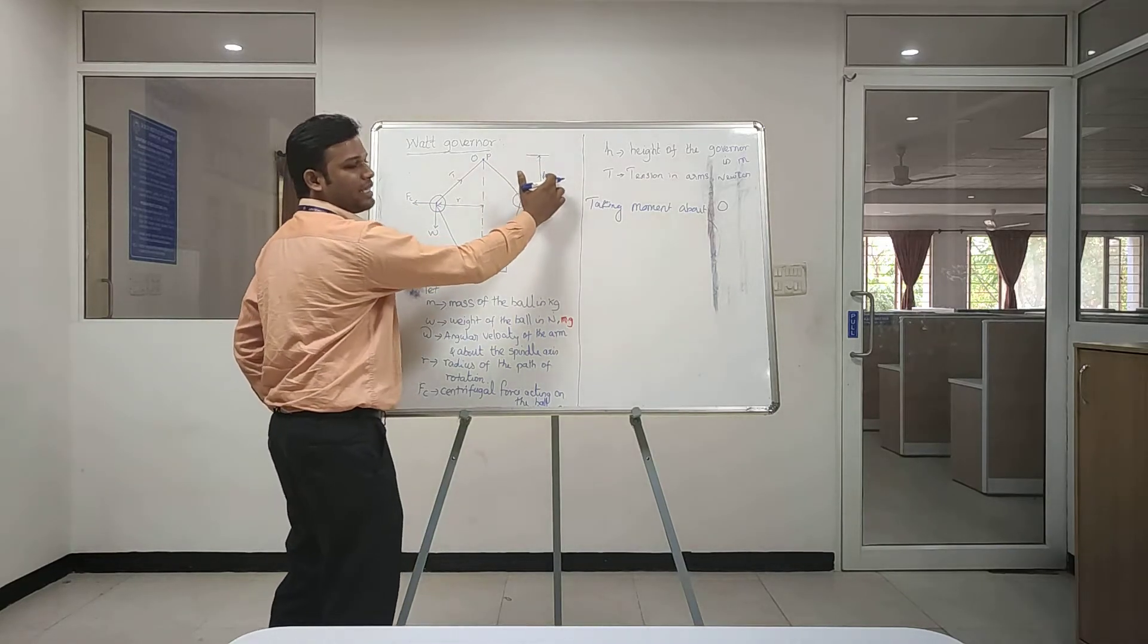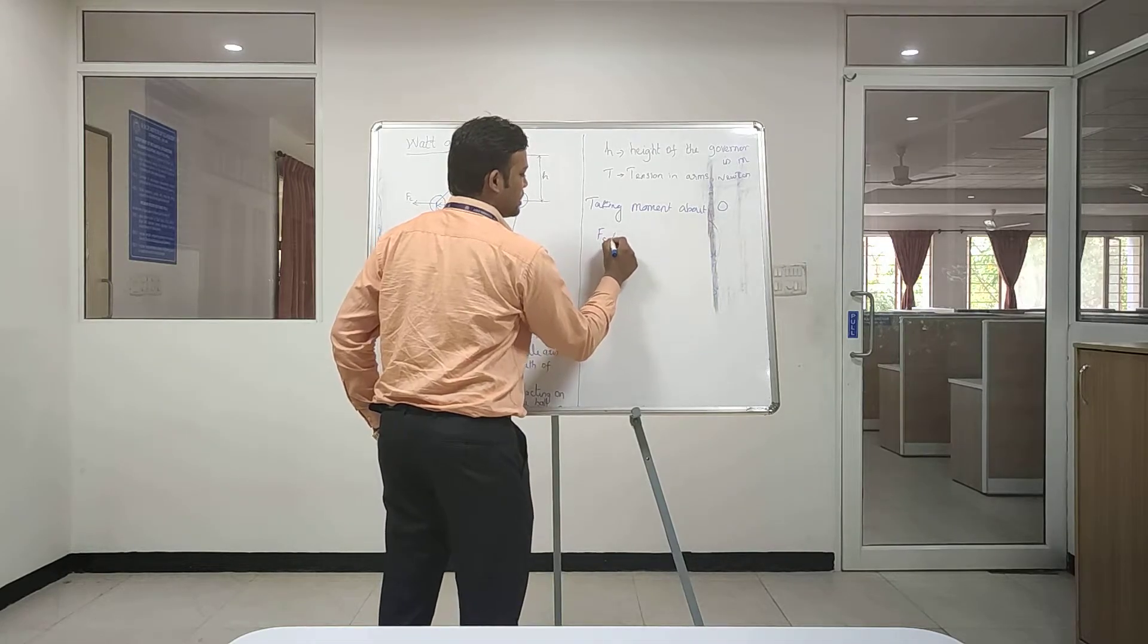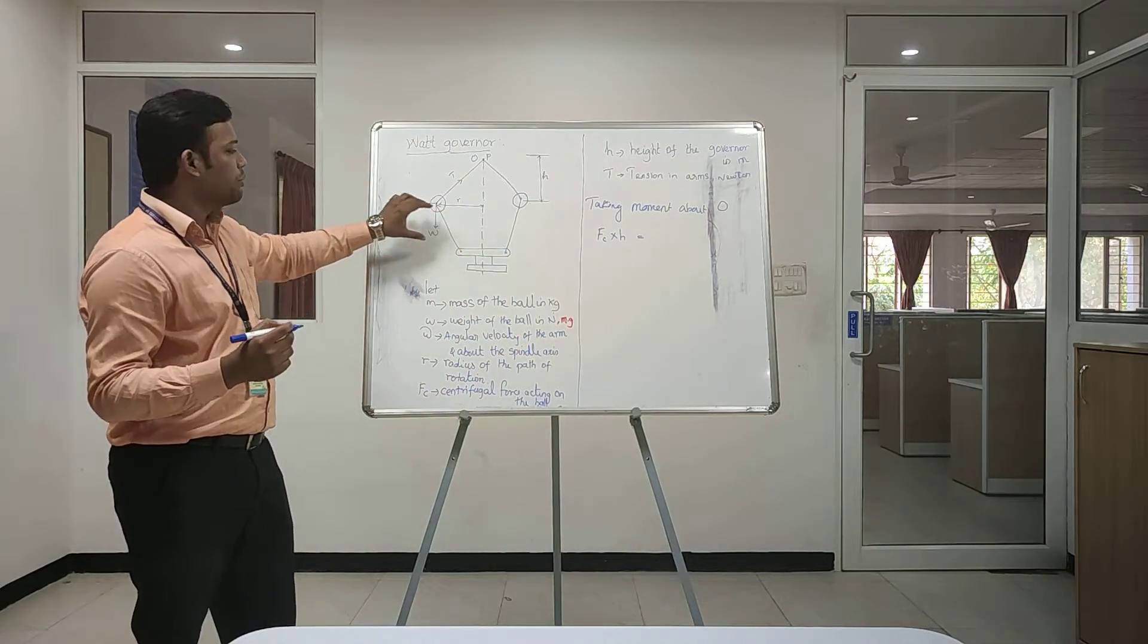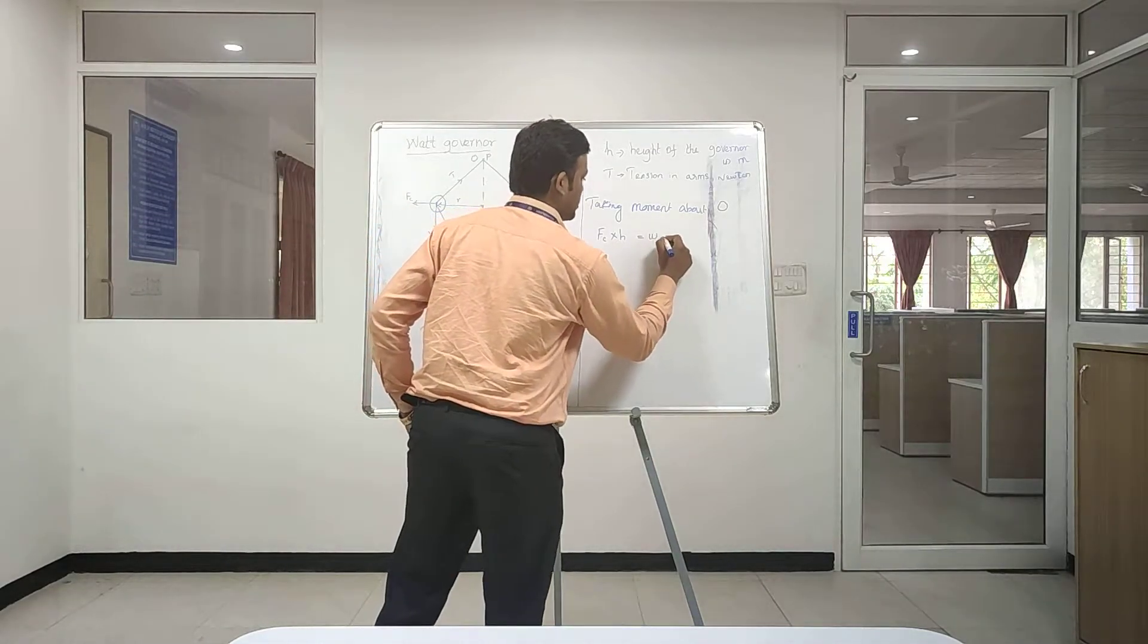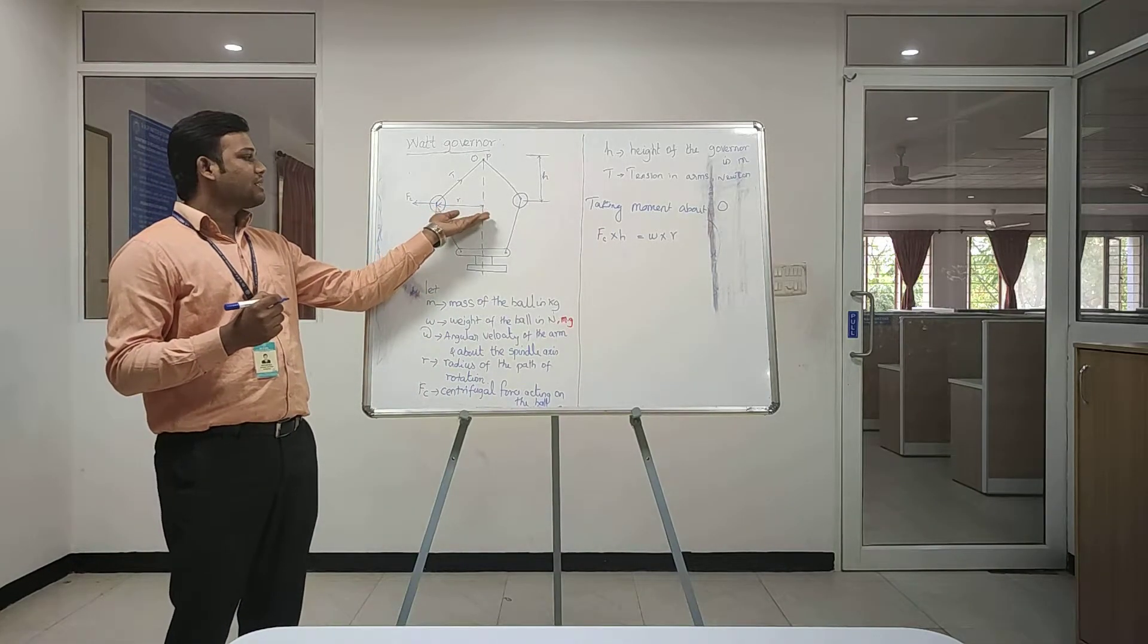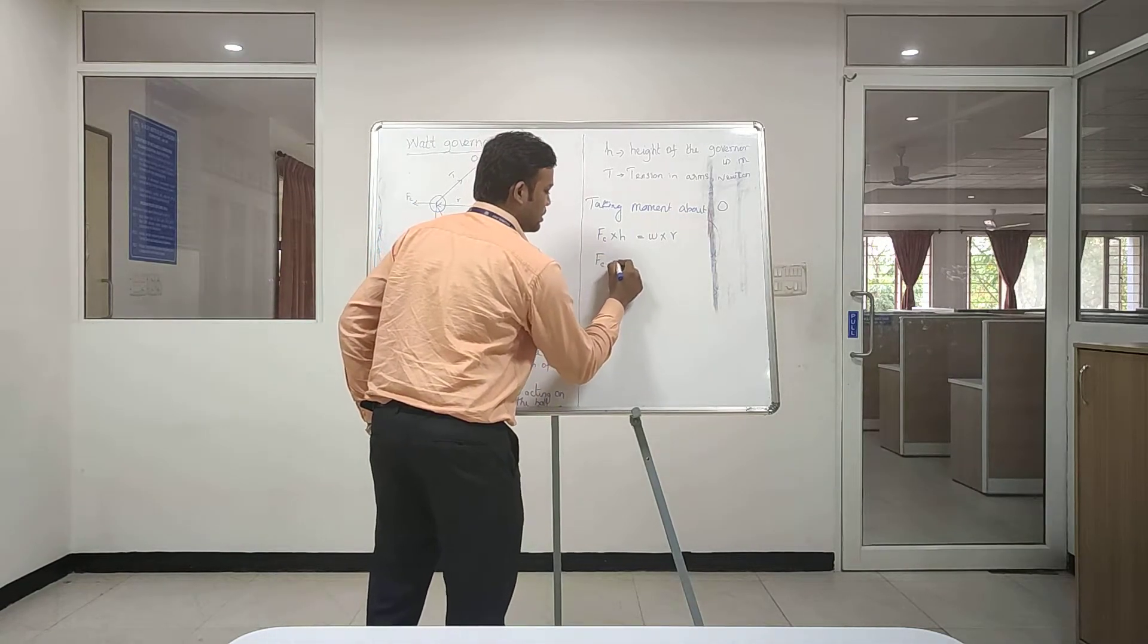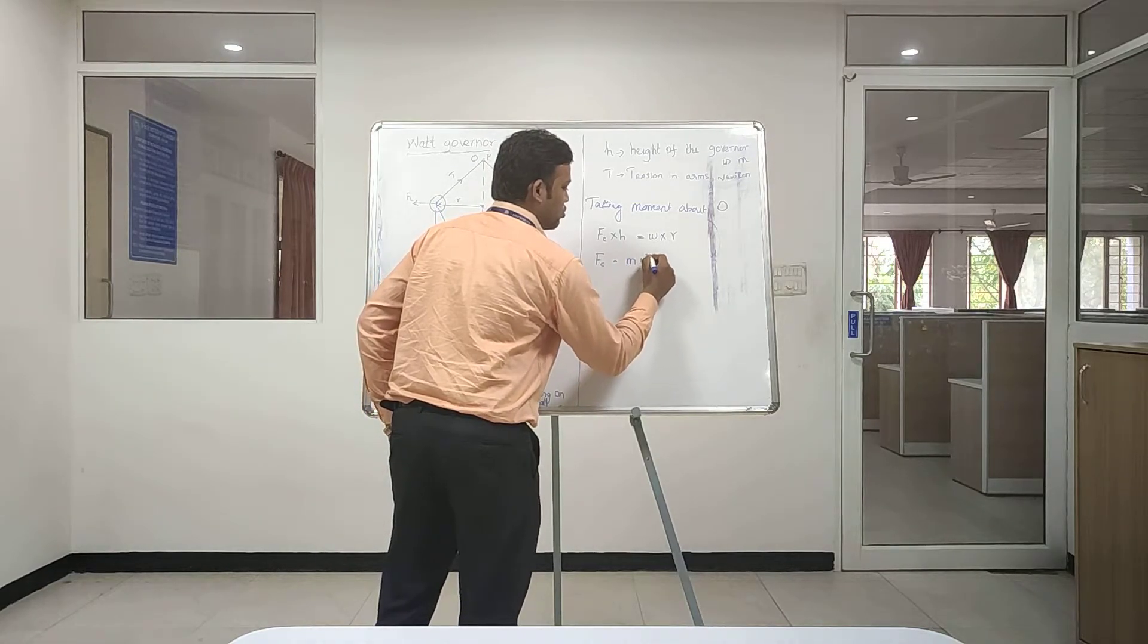This equation becomes Fc into h which is equal to W into r. W is the weight of the ball, it acts downwards. W into r, r is the distance between axis and the ball. We know the formula for centrifugal force: Fc equal to m omega square r.